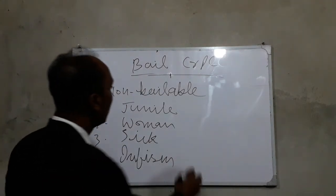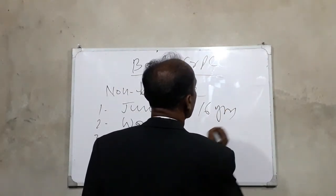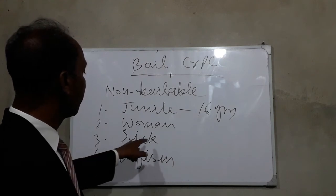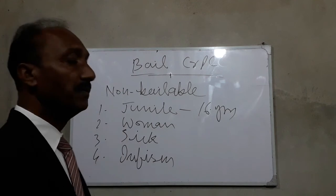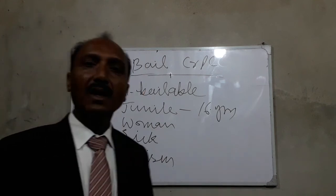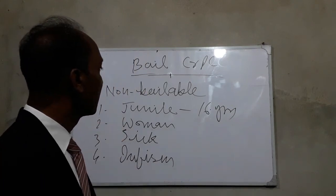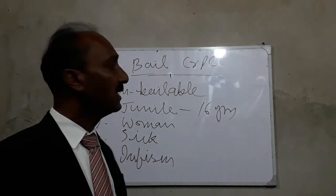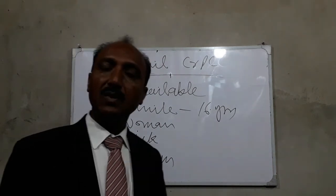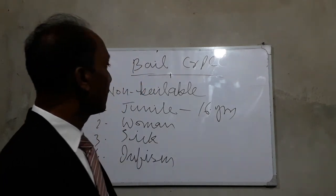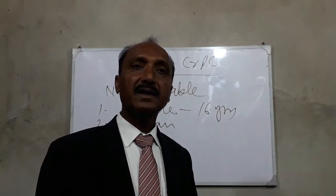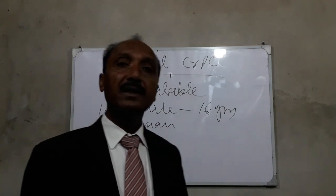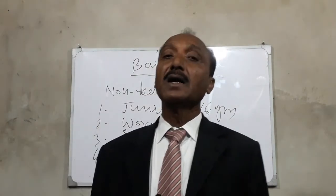A juvenile accused under the age of 16 years, a woman, a sick accused, or an infirm aged accused — all accused of these types are exempted from the rule of bail granted in non-bailable offenses. These accused are granted bail as though bail in bailable offenses. I hope you have understood this topic of bail.